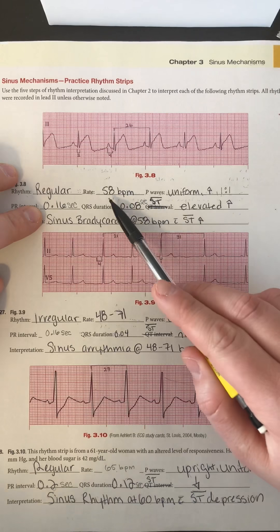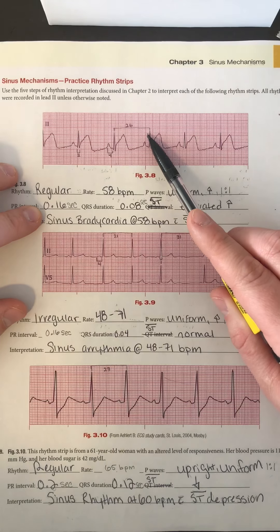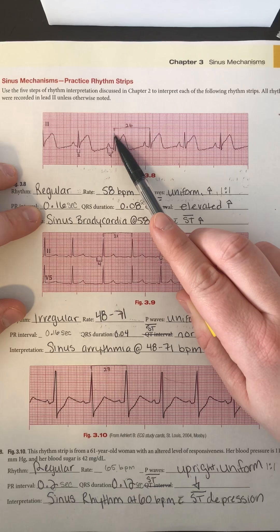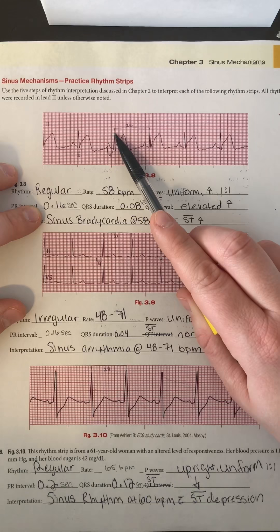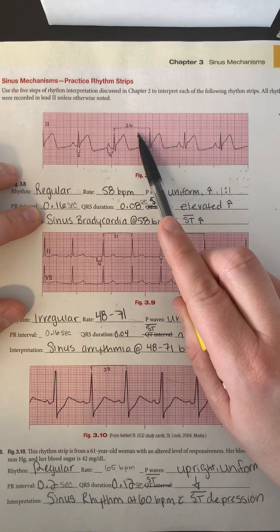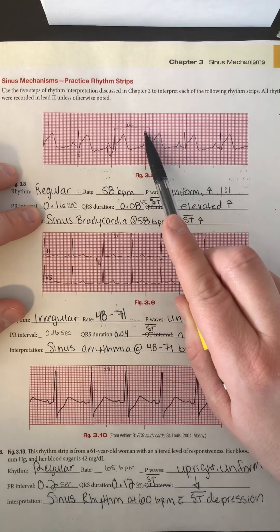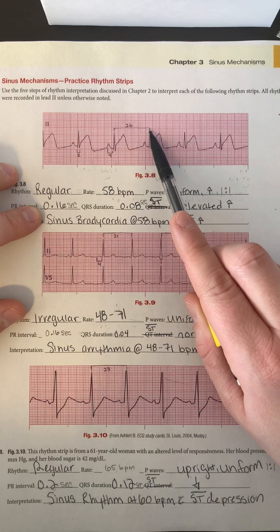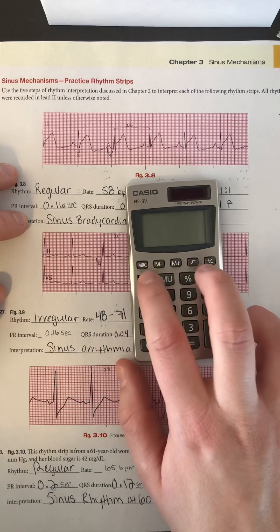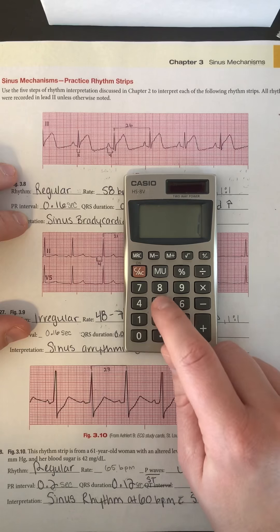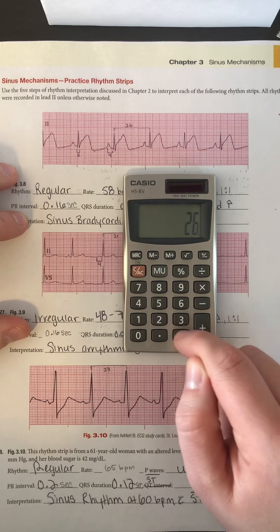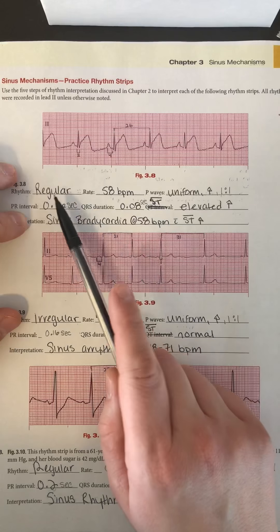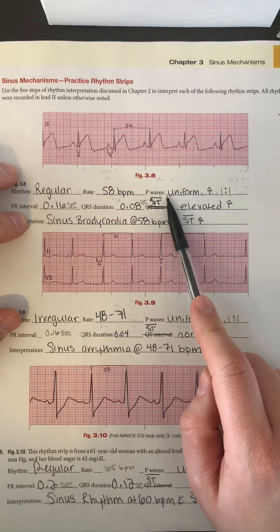To figure out rate, we're going to use the small block technique. I've sectioned off two QRS complexes that line up with the blocks pretty well so I don't have to split any blocks. I counted the number of small blocks: 5, 10, 15, 20, 21, 22, 23, 24, 25, 26. Using the 1500 method — 1500 divided by 26 — gives us 57.6, which I rounded to 58. So we have a regular rhythm at 58 beats per minute.